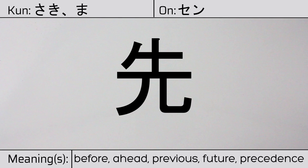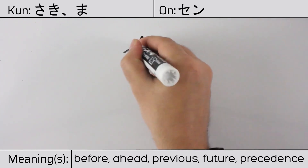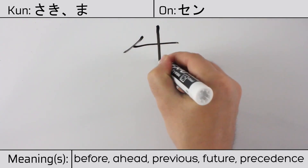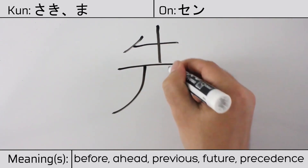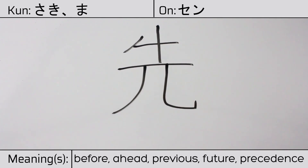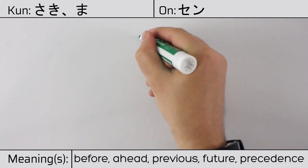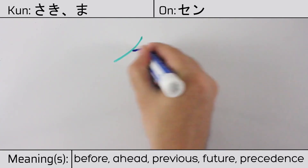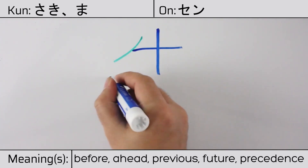Here is the stroke order. This character is made up of the following radicals or parts: katakana no, followed by tsuchi, and then the human legs radical.